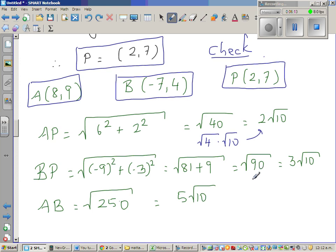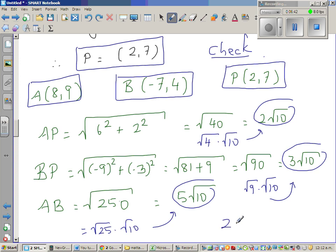And again, this can be written as square root of 9 times square root of 10, and that is same as this. And this is nothing but square root of 25 times square root of 10. So can you understand? AP is 2 root 10, BP is 3 root 10, and AB is 5 root 10. So what's the function of P or what is P doing to AB? It is dividing in the ratio of 2 is to 3.